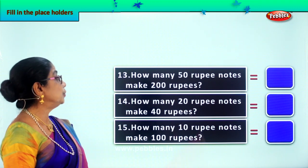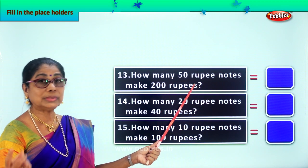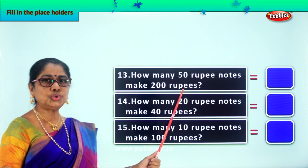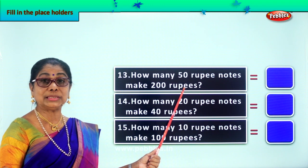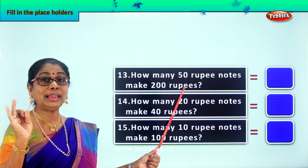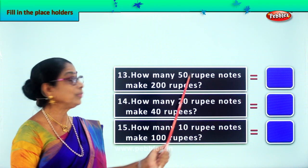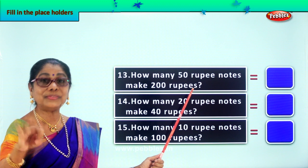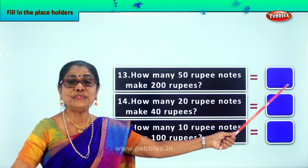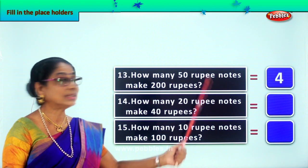Look at what's given here. Let's do it together. How many 50-rupee notes? What's the color of 50-rupee notes? Blue. How many 50-rupee notes make 200 rupees? 50 plus 50 is 100, plus 50 is 150, plus another 50 makes 200. So we need 4 fifty-rupee notes to make 200 rupees.